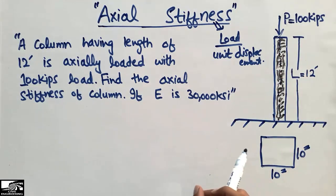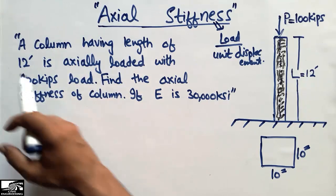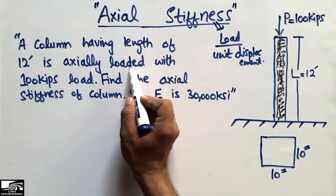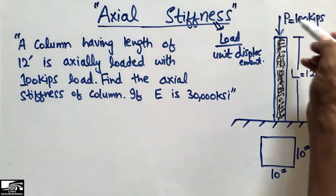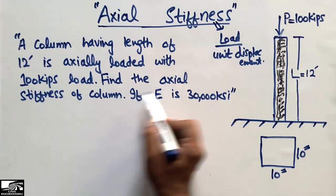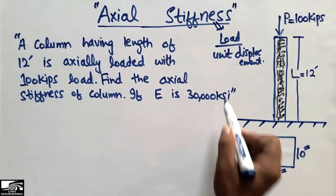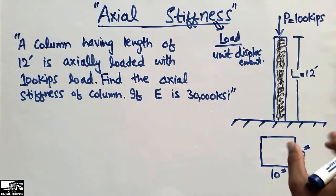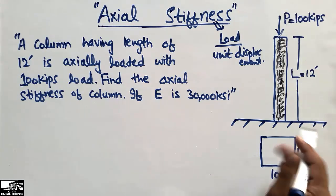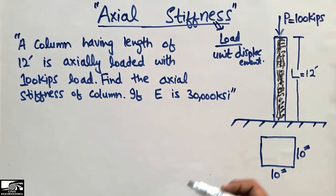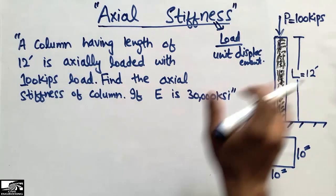The problem states that a column of length 12 foot is axially loaded with a 100 kips load. Find the axial stiffness of this column if the modulus of elasticity E is 30,000 KSI (kips per square inch). The cross-section of the column is a square of 10 by 10 inches, with one end fixed and the other end free — so it is like a cantilever column.